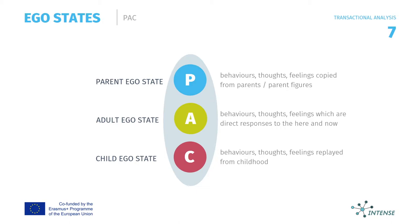This change can be easily noticed by the manners, appearances, words, gestures and tones a person utters. The three distinct states, called the ego states, are the parent ego state, the adult ego state and the child ego state.